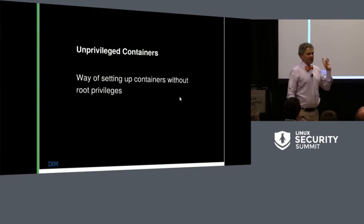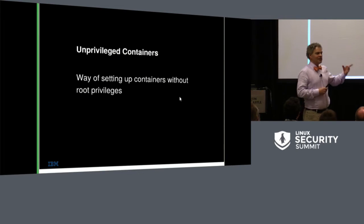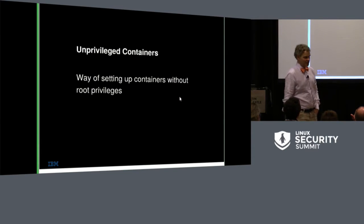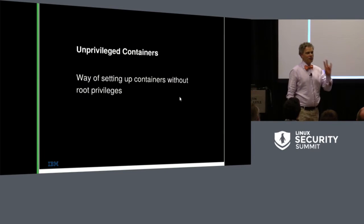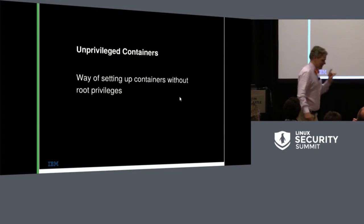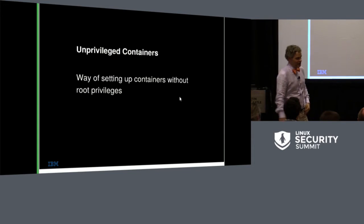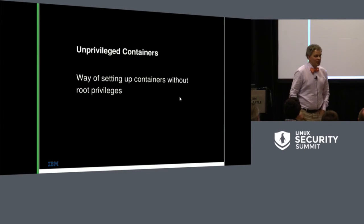Unprivileged containers — setting up containers without root privileges — is a contentious term because it means different things to different people. What it really means is putting a UID into a container that inside the container can pretend it's root, but viewed from outside the container, it's a nobody UID — an unprivileged UID. You can do this two ways: simply don't put root into your container at all, which a lot of people should do but don't; or give a UID zero inside the container some elevated privilege over other UIDs inside that container.